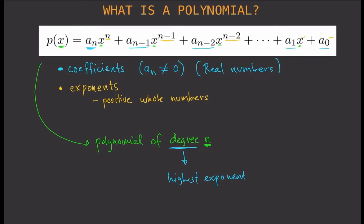Now, some examples. Example one: 2x³ - 3x² + x - 3. This is a polynomial because if you look at the exponents, these are all positive, and if you look at the coefficients, these are all real numbers.